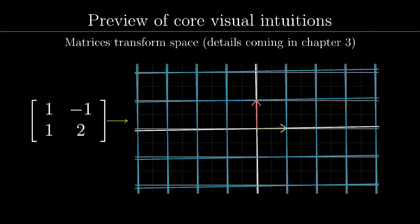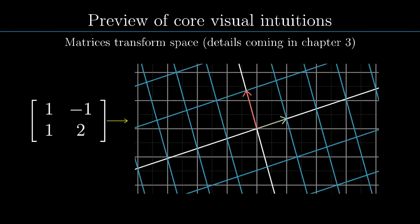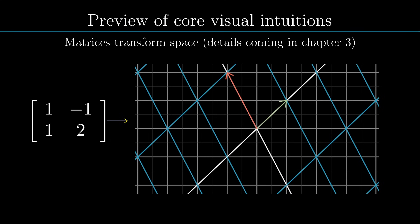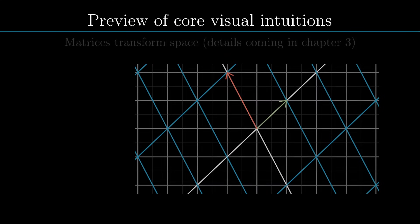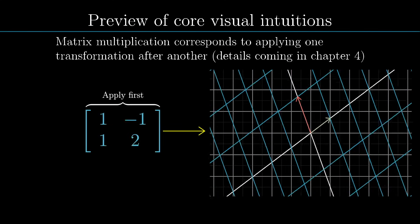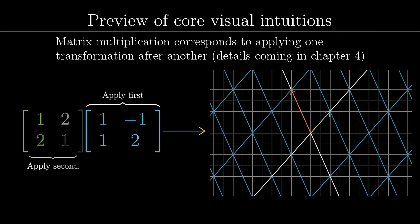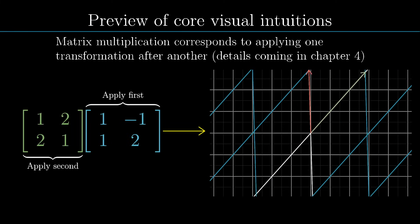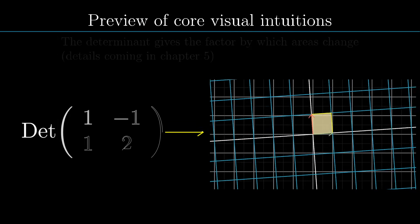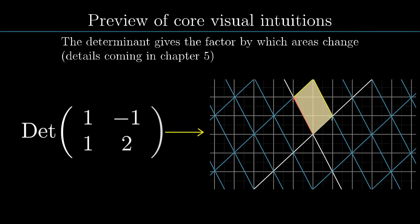It's not that different with linear algebra, and luckily, just as with trigonometry, there are a handful of visual intuitions underlying much of the subject. And unlike the trig example, the connection between the computation and these visual intuitions is typically pretty straightforward. When you digest these and really understand the relationship between the geometry and the numbers, the details of the subject, as well as how it's used in practice, start to feel a lot more reasonable.